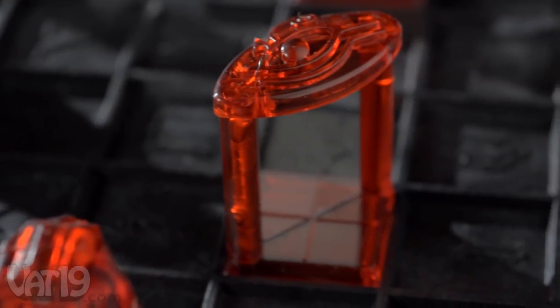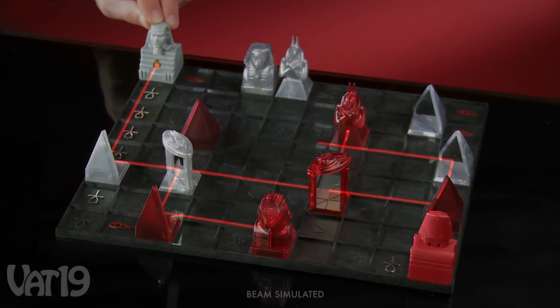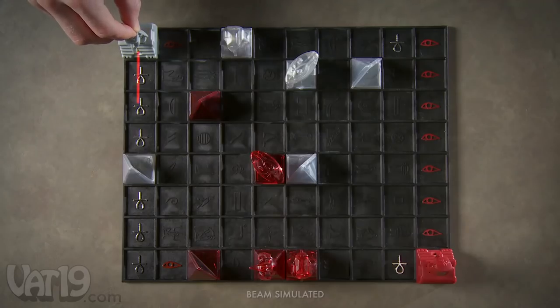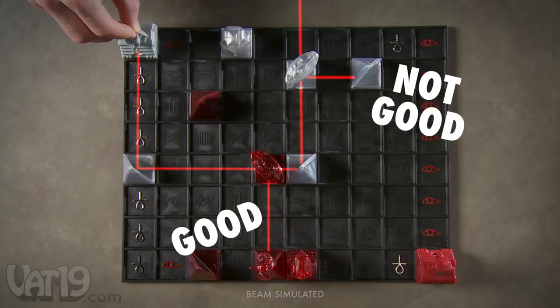Since the game expansion set includes one beam splitter for each opponent, play can include up to three different laser beams. So think carefully, because the Eye of Horus can be a double-edged sword.